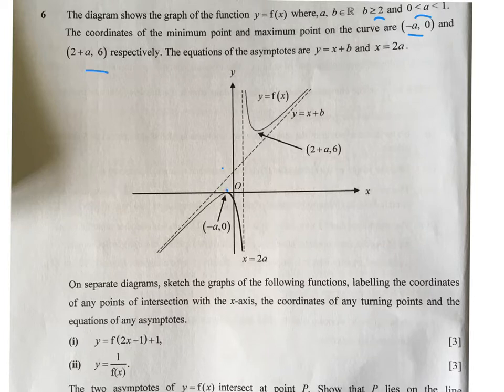You have the equation of the asymptotes: y equals x plus b, and x equals 2a. In the second diagram, you need to sketch the graph of the following function. The first one you need to sketch is y equals 2f(2x minus 1) plus 1.